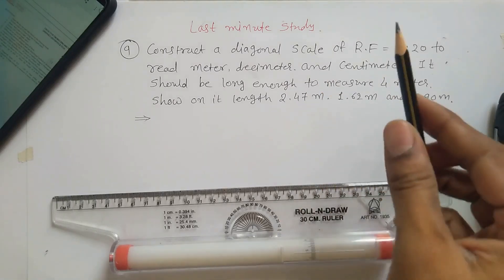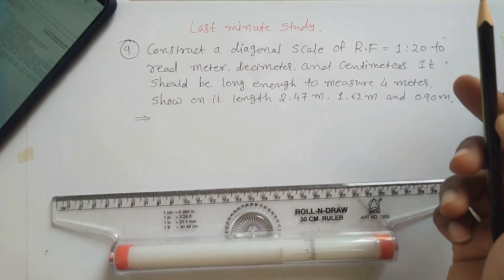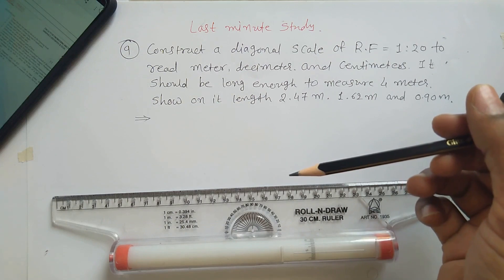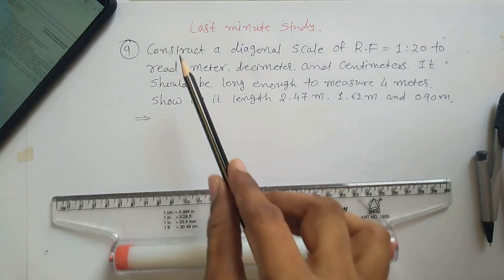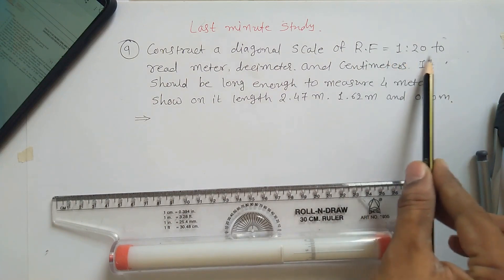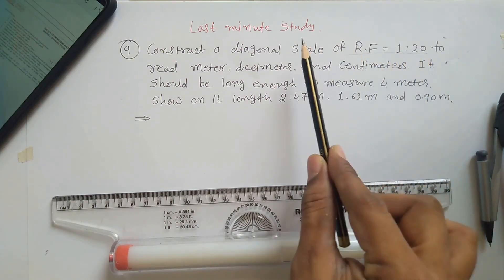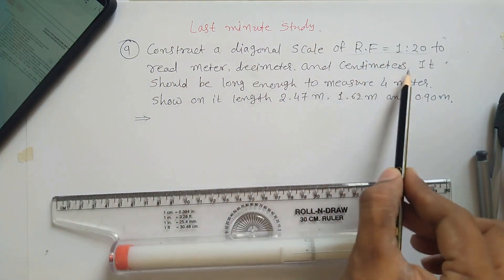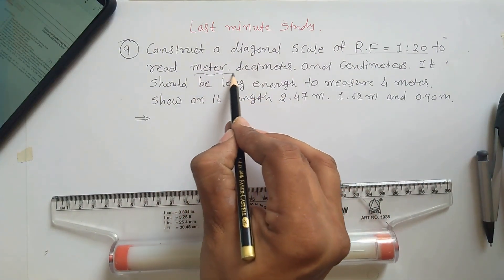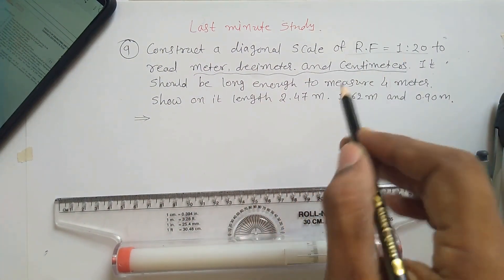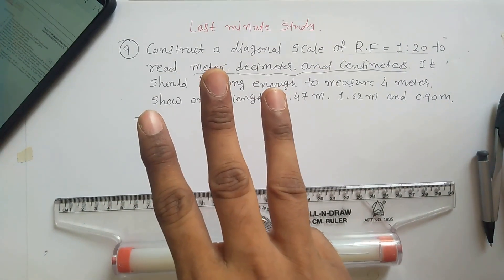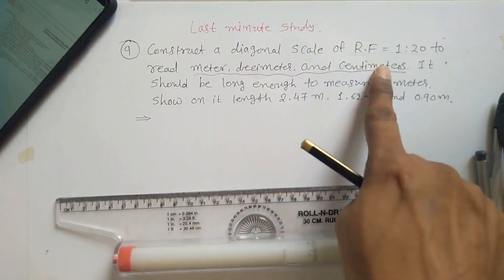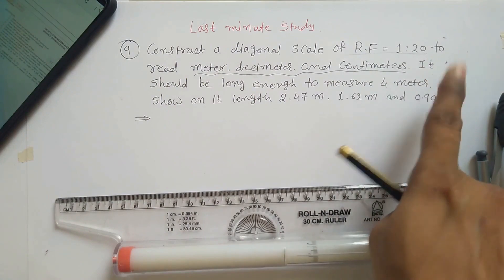Previously we saw a plane scale in problem number eight. This is problem number nine from sheet number one, which is a diagonal scale based problem. The problem says: construct a diagonal scale of RF 1 to 20, to read meter, decimeter, and centimeter. Diagonal scale is used to measure up to three units, whereas in plane scale you can measure up to two units.